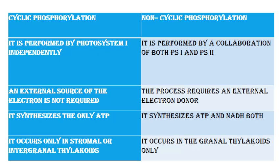Difference between cyclic and non-cyclic phosphorylation: Cyclic phosphorylation is performed by photosystem 1 independently; non-cyclic is performed by a collaboration of both PS1 and PS2. In cyclic, an external source of electrons is not required; in non-cyclic, the process requires an external electron donor. Cyclic phosphorylation synthesizes only ATP; non-cyclic synthesizes both ATP and NADPH. Cyclic occurs in stromal or intergranal thylakoids; non-cyclic occurs in granal thylakoids only.